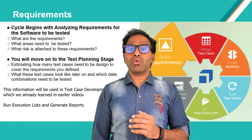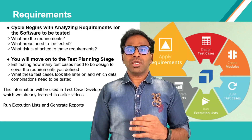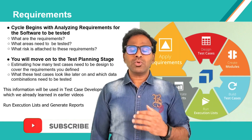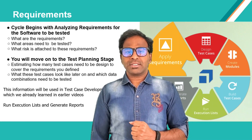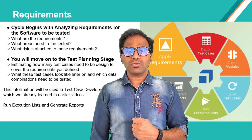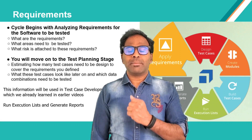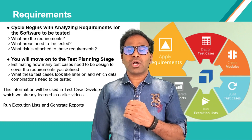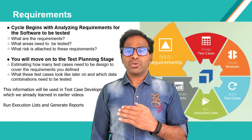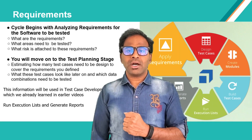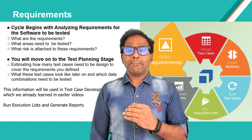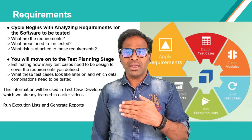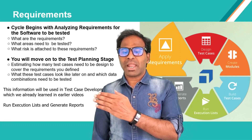First, any test lifecycle starts with requirements. In this phase we identify what requirements need to be tested for a software, what areas need to be tested, and what risk is attached to these requirements. All of this can be achieved using the requirements section in Tricentis Tosca. In the diagram, the requirements section is denoted by yellow color — the same color used in the Tosca tool for requirements.